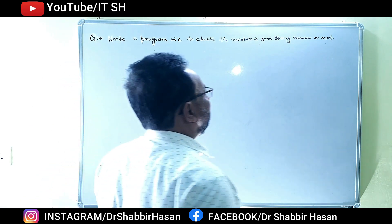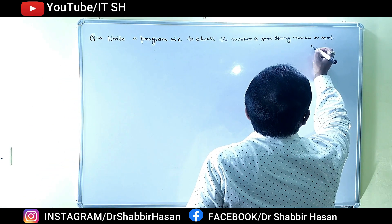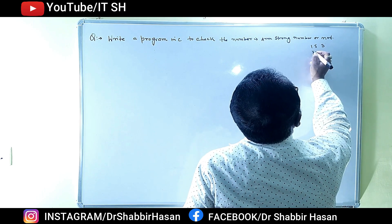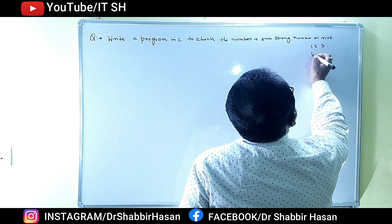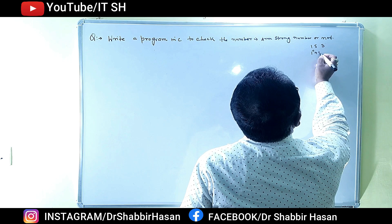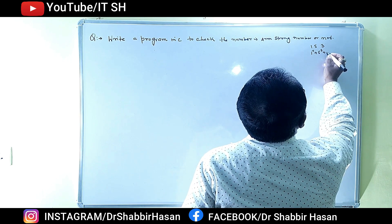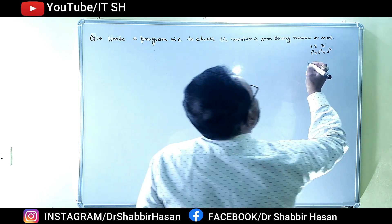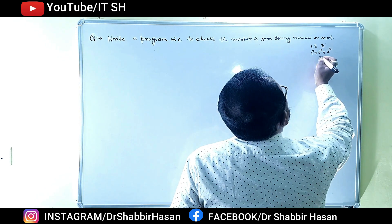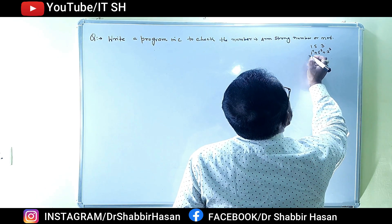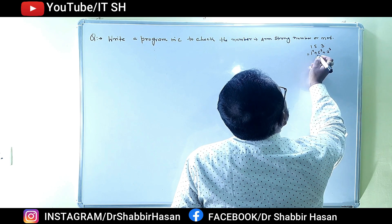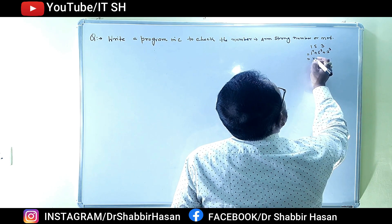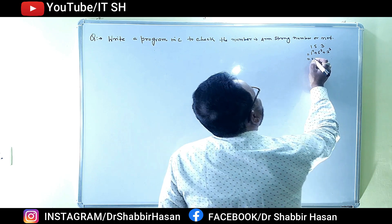तो Armstrong number क्या होता है? Example बताते हैं - 153 ये Armstrong number है। कैसे होगा? तो 1 का cube कीजिए, plus 5 का cube कीजिए, plus 3 का cube कीजिए। इसका cubic निकालना है, सब का अलग-अलग number करके। उसके बाद जब sum करिएगा, तो अगर ये भी 153 आ जाए तो हमारा Armstrong number होगा।